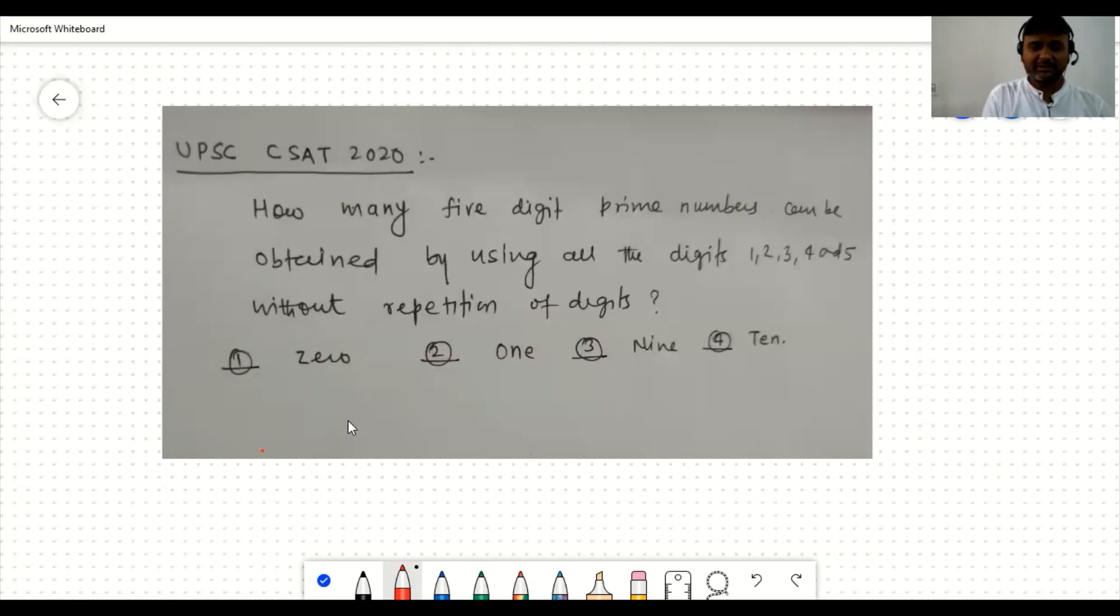First we understand the problem and how to approach this type of question about prime numbers. How many 5-digit prime numbers can be obtained by using all the digits 1, 2, 3, 4, 5 without repetition of digits? Digits are not to be repeated and you have to make a 5-digit prime number using these 5 digits.